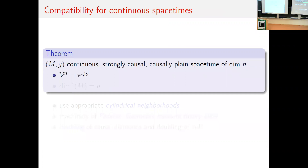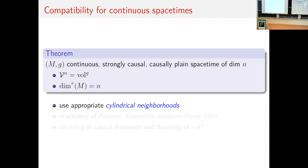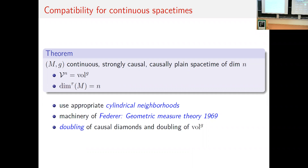Spacetimes are Lorentzian pre-length spaces, so how do these measures compare to the volume measure? We can show that not just for smooth spacetimes but also for continuous spacetimes with well-behaved causal structure — strongly causal and causally plain (no causal bubbling) — the n-dimensional Lorentzian measure, where n is the topological dimension of the manifold, equals the volume measure, so the synthetic dimension is n. This uses a refined version of cylindrical neighborhoods, machinery of Federer, and crucially a doubling property of causal diamonds and the volume measure for continuous spacetimes.